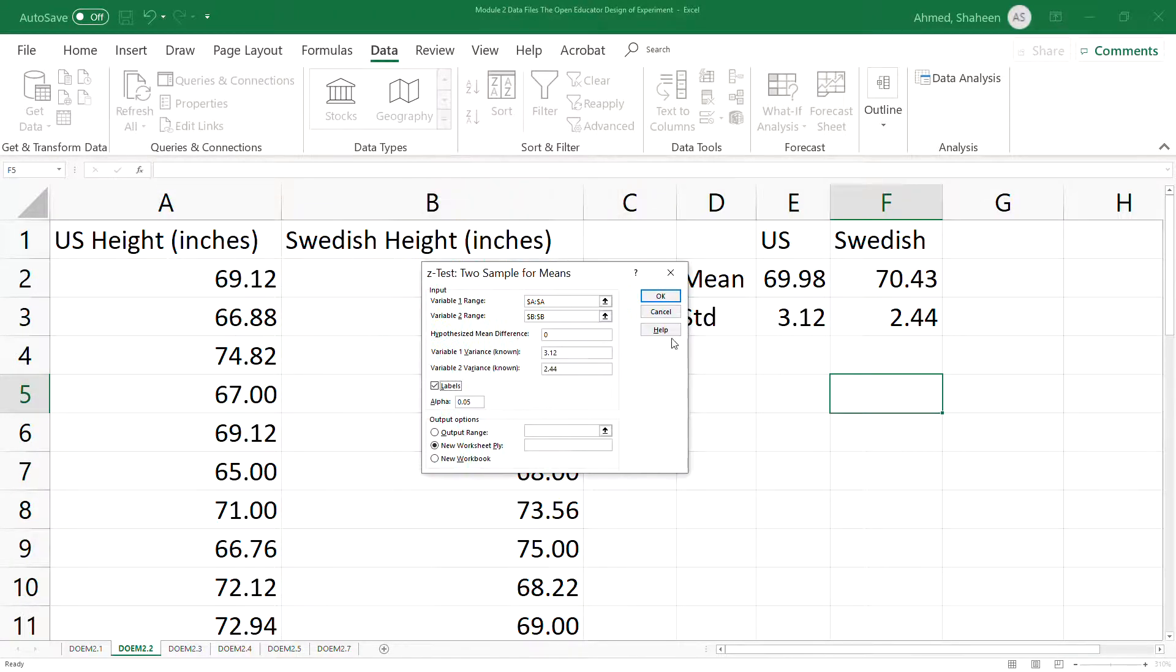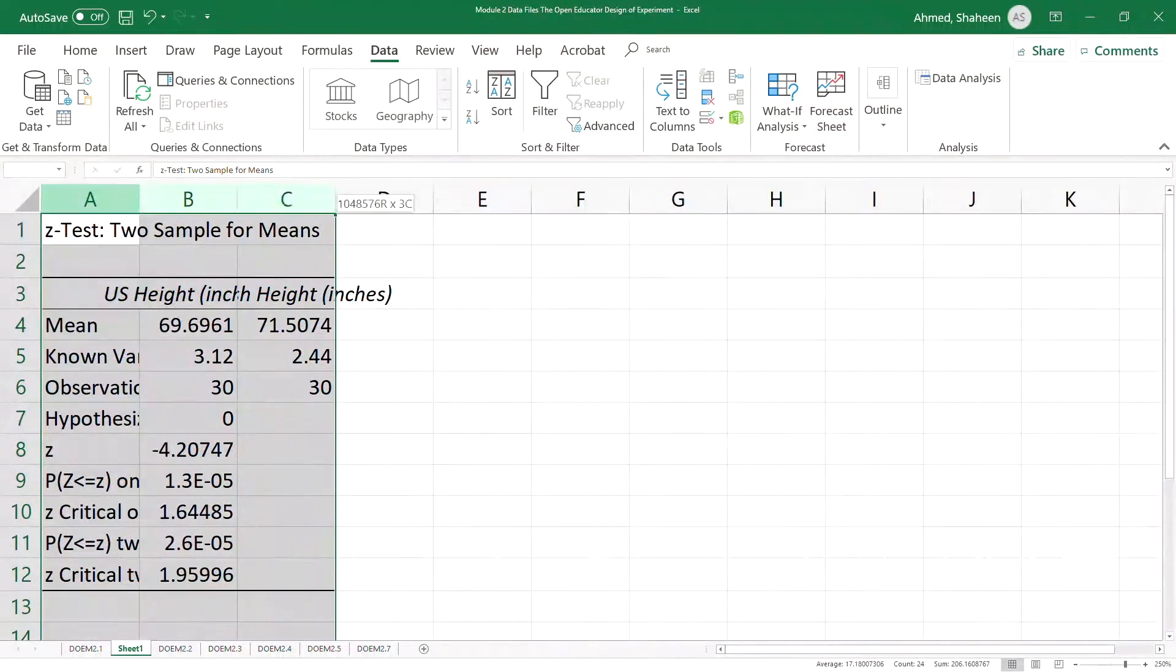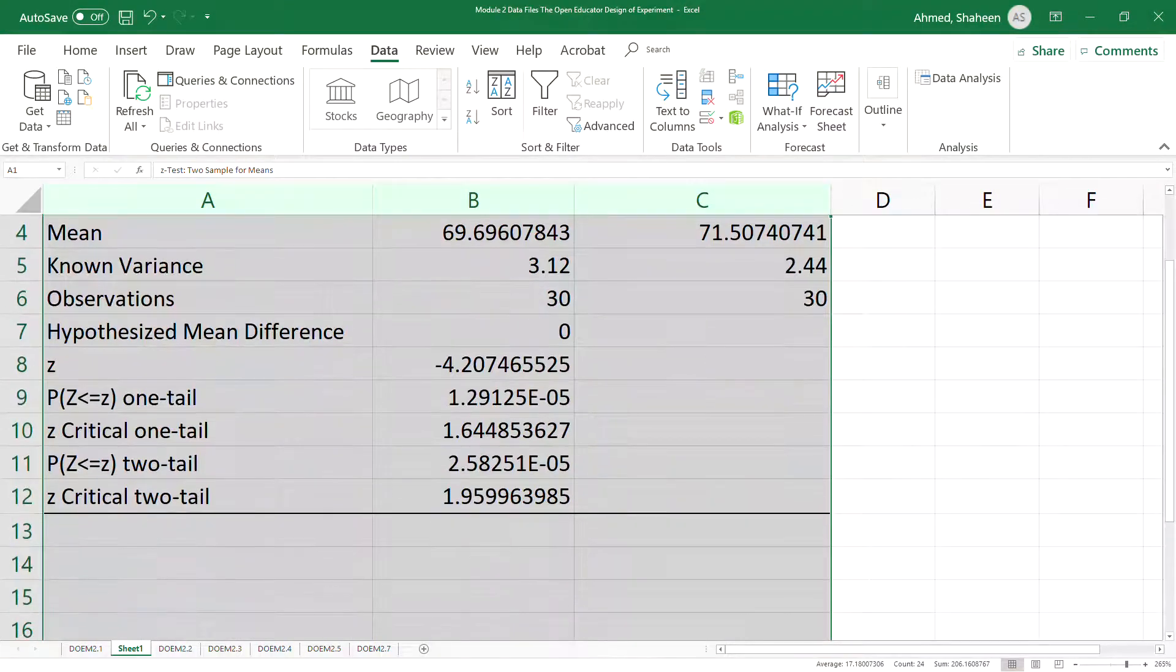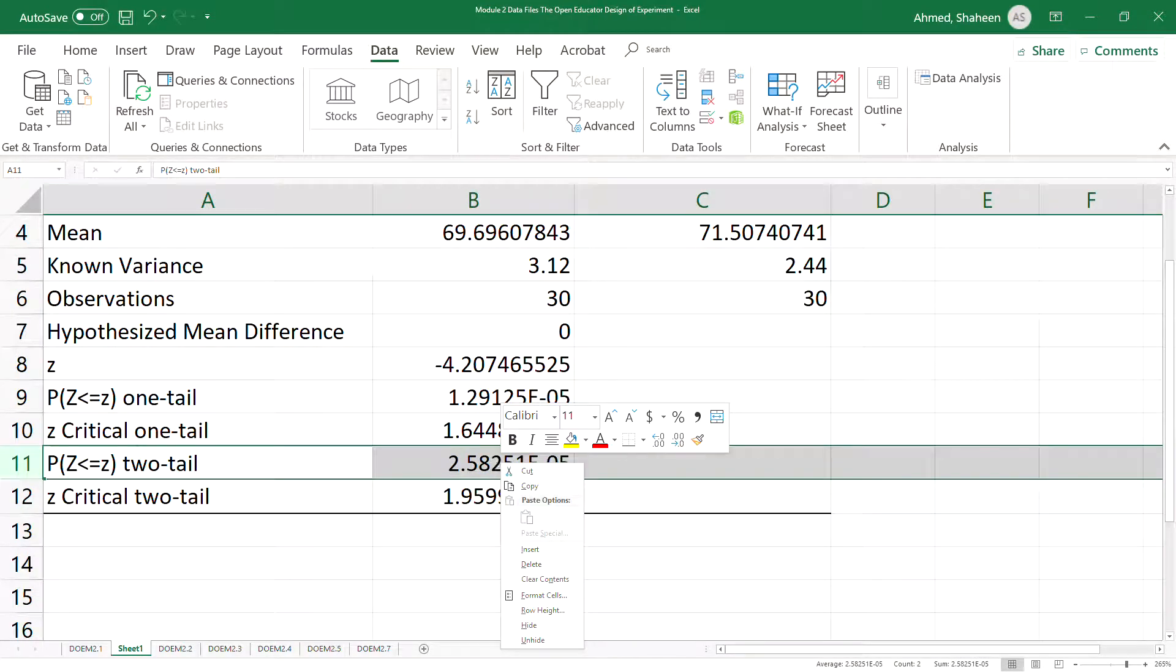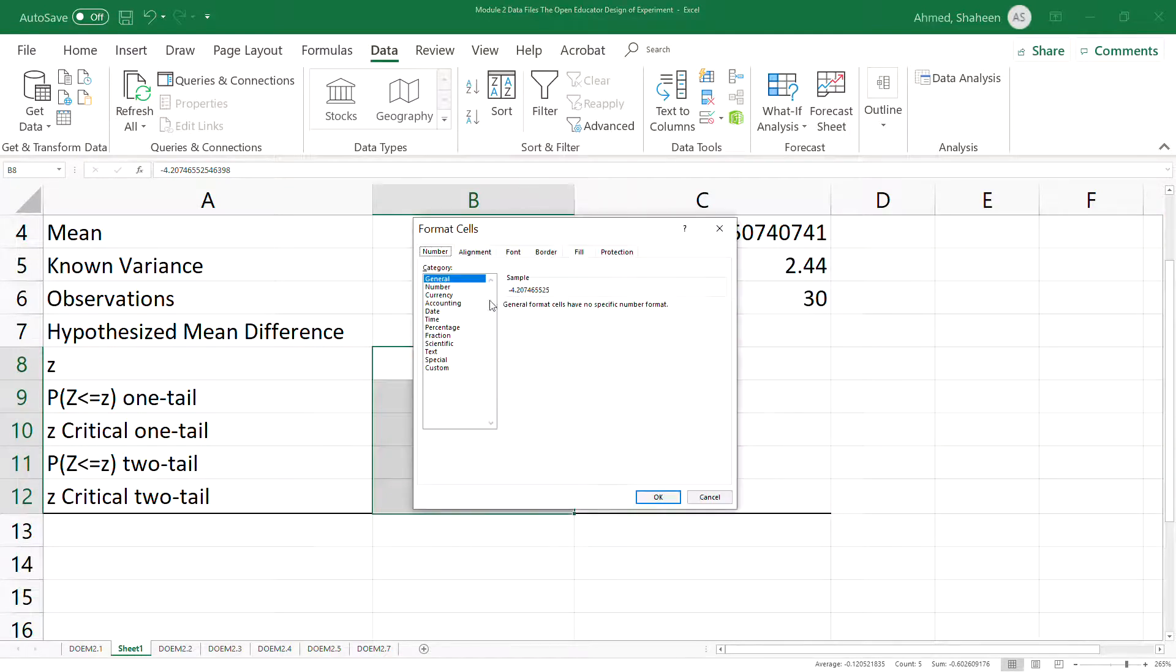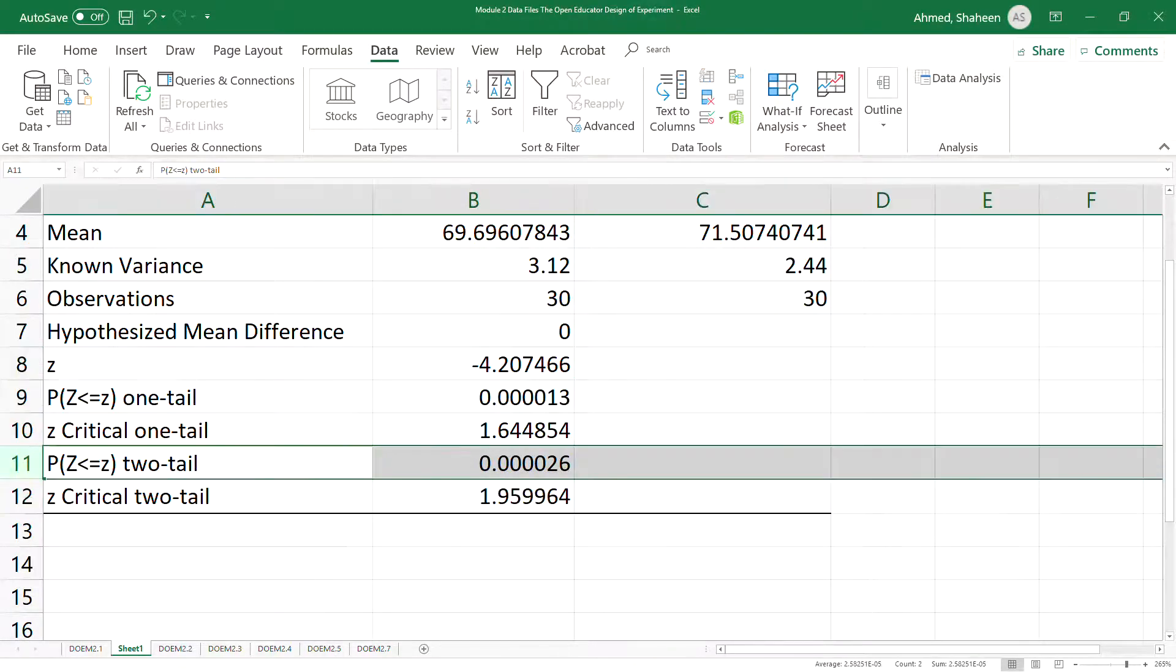That will give me the result that I need. The probability value for the two-sample test is very, very low. Let me format it—not in engineering notation—with six decimal points. This is the probability value for the null hypothesis.